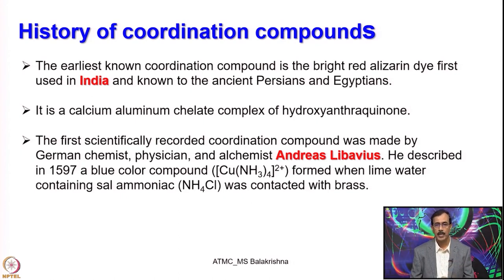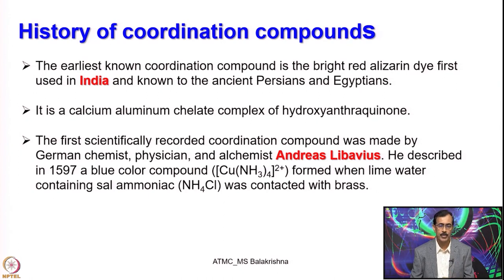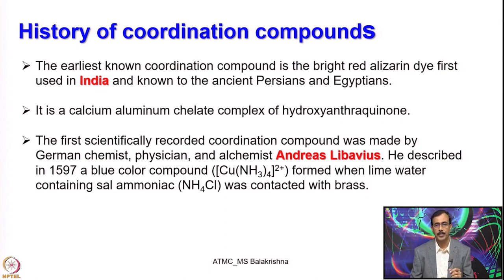This German chemist Andreas Leibauer-Weweis was the first one who recorded a scientifically inorganic complex for the first time. What he did was he described in 1597 a blue colour compound having composition of four ammonia and a copper 2+ ion.